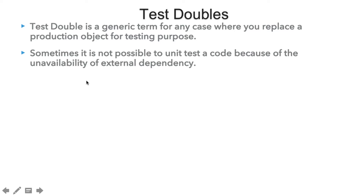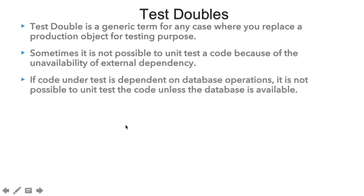We need test doubles for unit tests because many times it is not possible to unit test code due to the unavailability of the external dependency. For example, if our code under test is dependent on database operations, it is not possible to unit test that code unless the database is available. If we write a unit test that calls external services dealing with the database and the database is not available next time we run the test, our test case will fail or keep waiting. Those unit tests are not reliable.